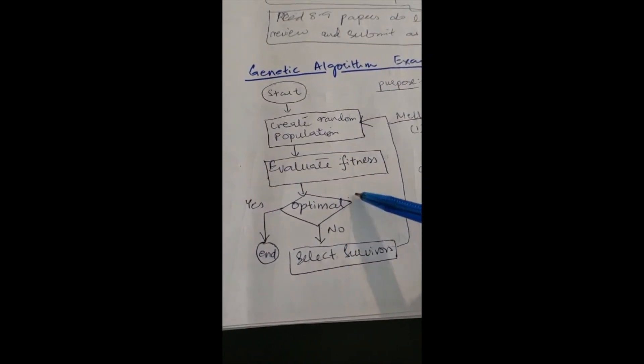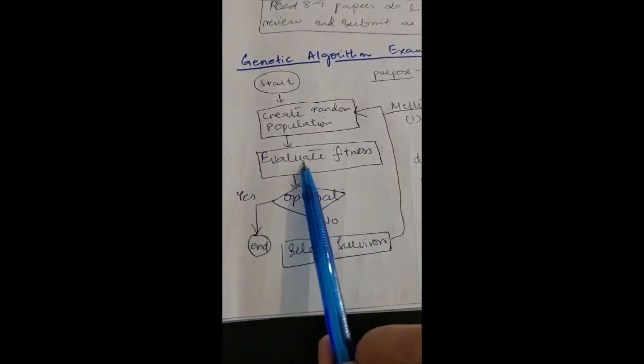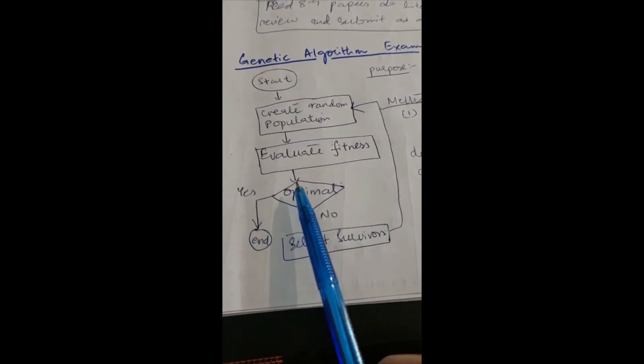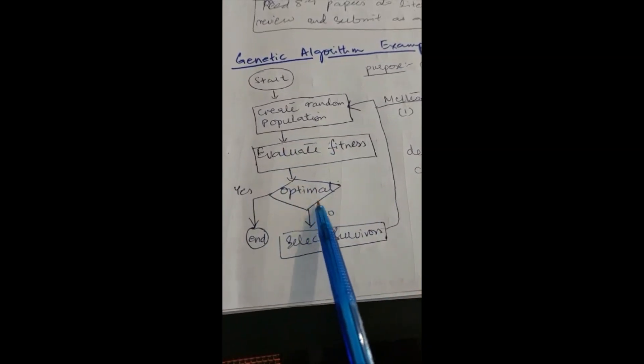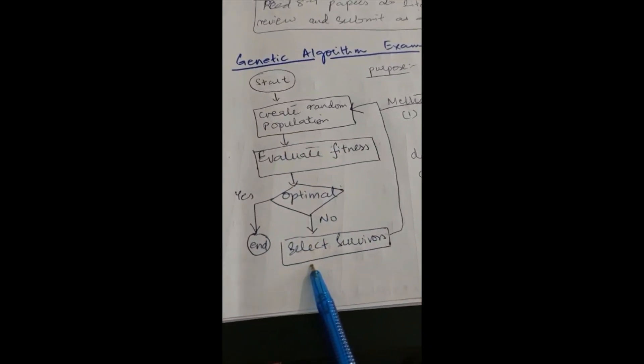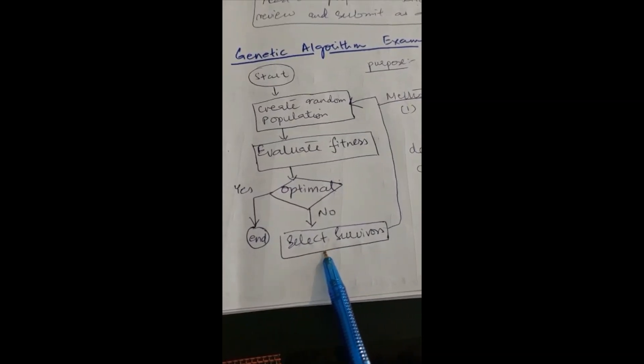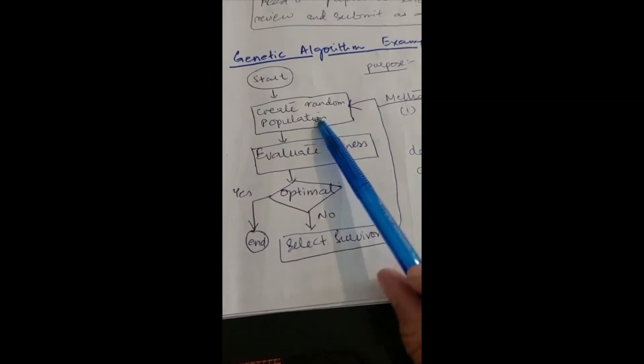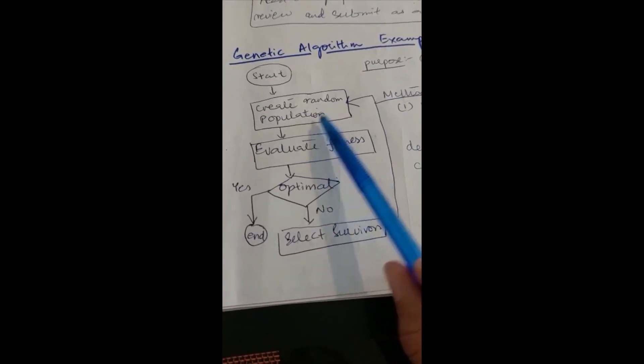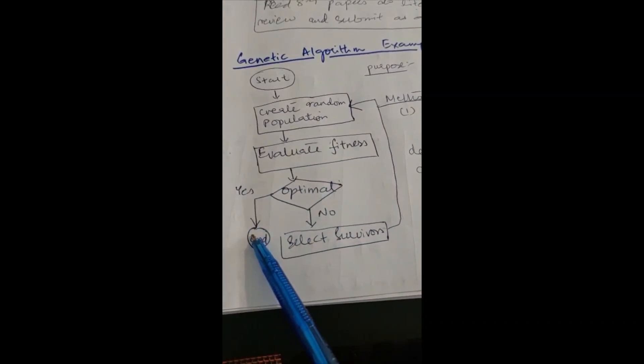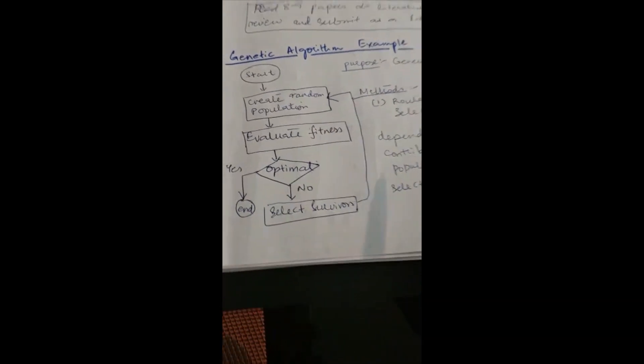If the fitness is yes, if the population is fit then we terminate. If the population is not fit then we select the survivors. Some population we kill and survive. On this basis, we create random population again. This cycle will continue until we have fit population. This is an overall understanding.